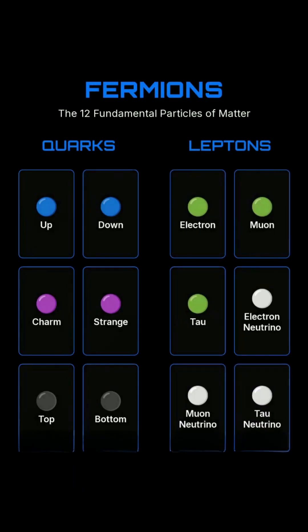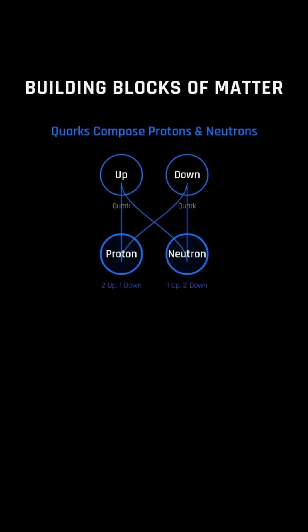The standard model defines 12 matter particles — fermions — divided into quarks and leptons. Quarks compose protons and neutrons.